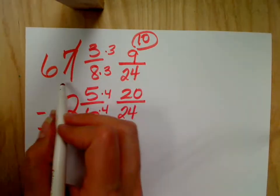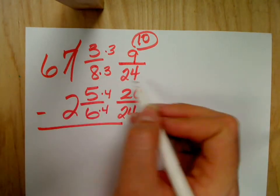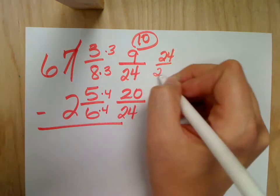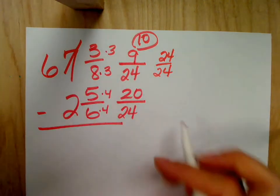This becomes a 6 because I borrowed a whole from it. Now, if I borrow a whole, what is that whole going to look like? Well, it's going to be 24 over 24. Because the question is, how many times does 24 go into 24? And that's 1, so 1 whole time.